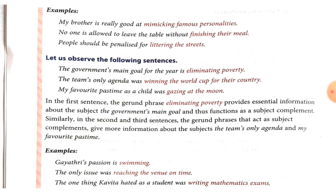Now, students, let us observe the following sentences. First: 'The government's main goal for the year is eliminating poverty.' Here, in the first sentence, the gerund phrase 'eliminating poverty' provides essential information about the subject, 'the government's main goal', and thus functions as the subject complement. In the second sentence: 'The team's only agenda was winning the World Cup for their country.' Here, the gerund phrase acts as the subject complement and gives more information about the subject.